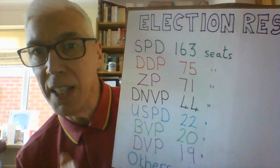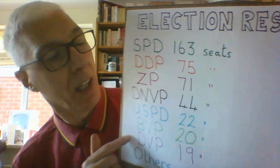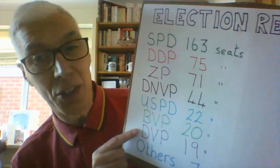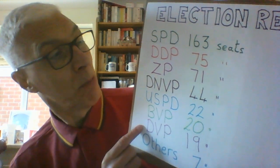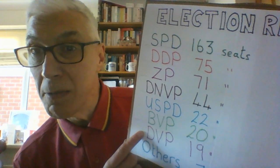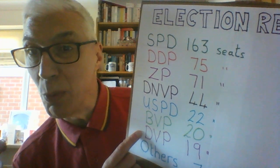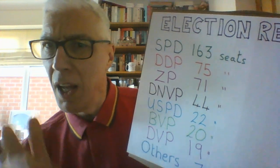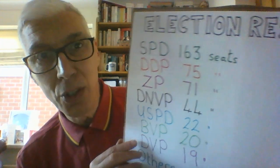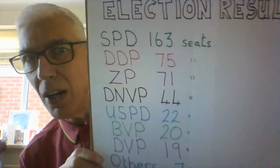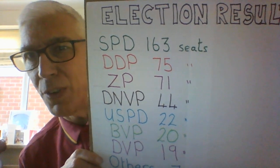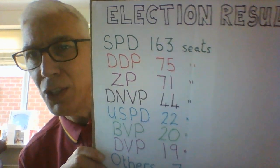We will look at that in this video, because some people say that was good and some people say that was a weakness. I'll explain both sides and you can decide. Those are the results of the first January 1919 election.